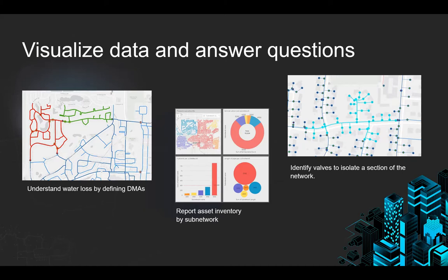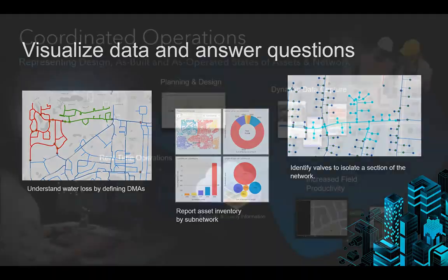This slide talks about the better visualization that the utility network offers — using sub-networks to visualize water loss in more manageable areas. There's also the coordinated operations aspect of the utility network, which allows you to access the functionality as well as the data from anywhere and from any device: from the desktop, from the web, and from your mobile device — similar to the online solution.